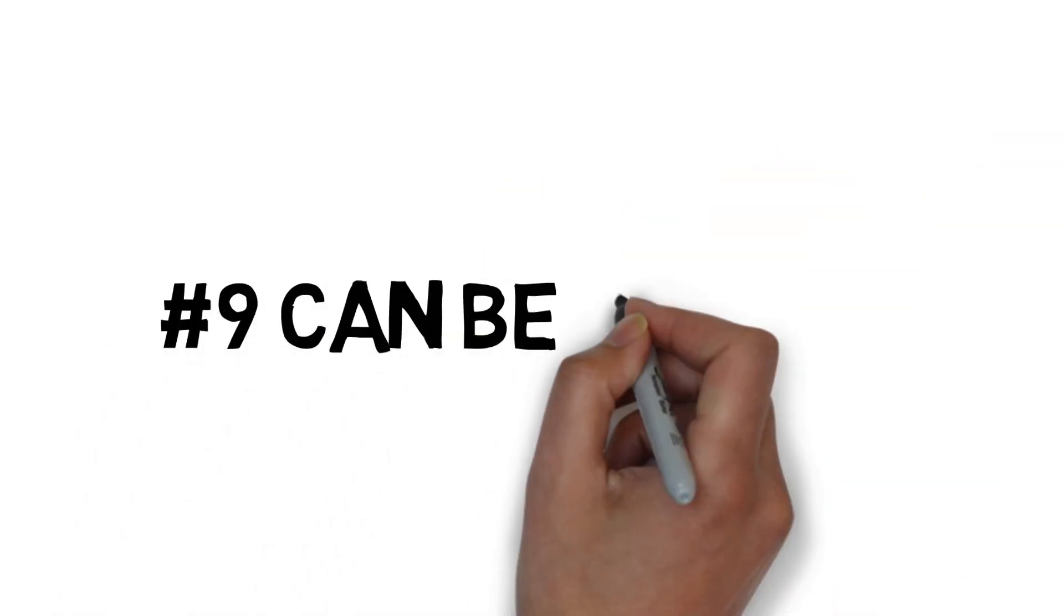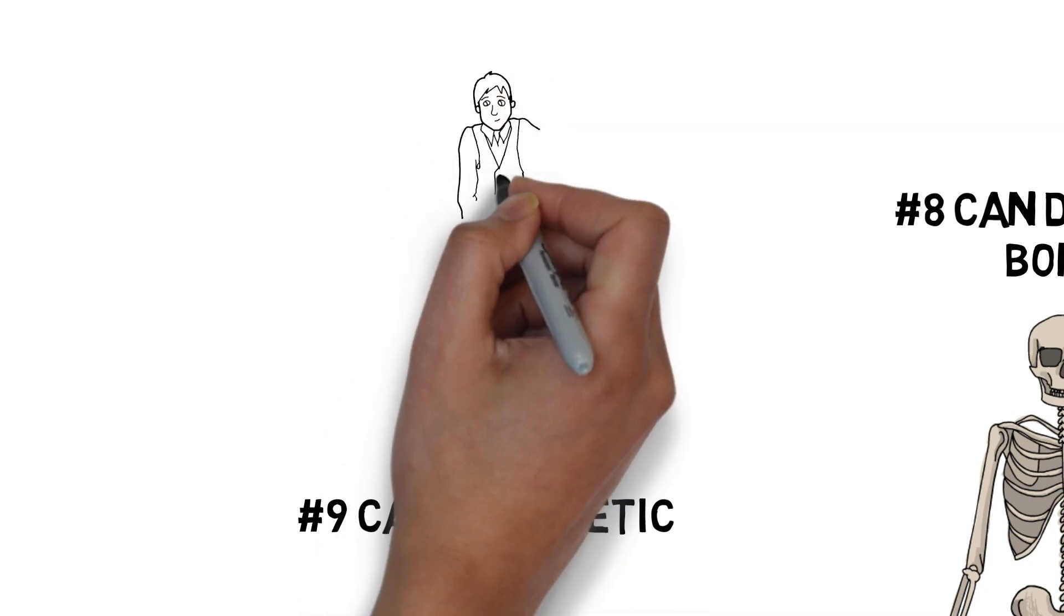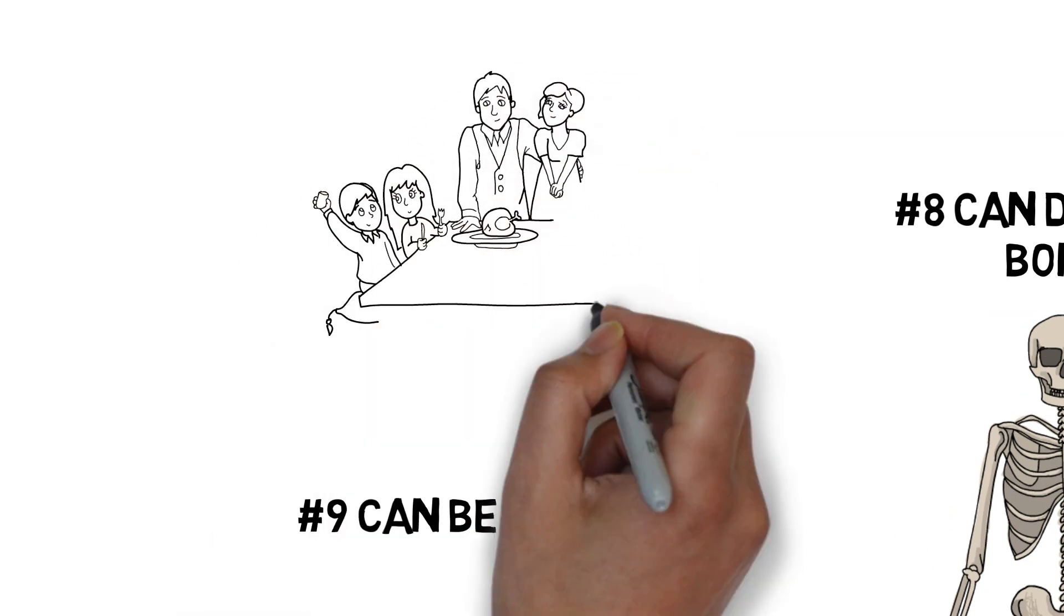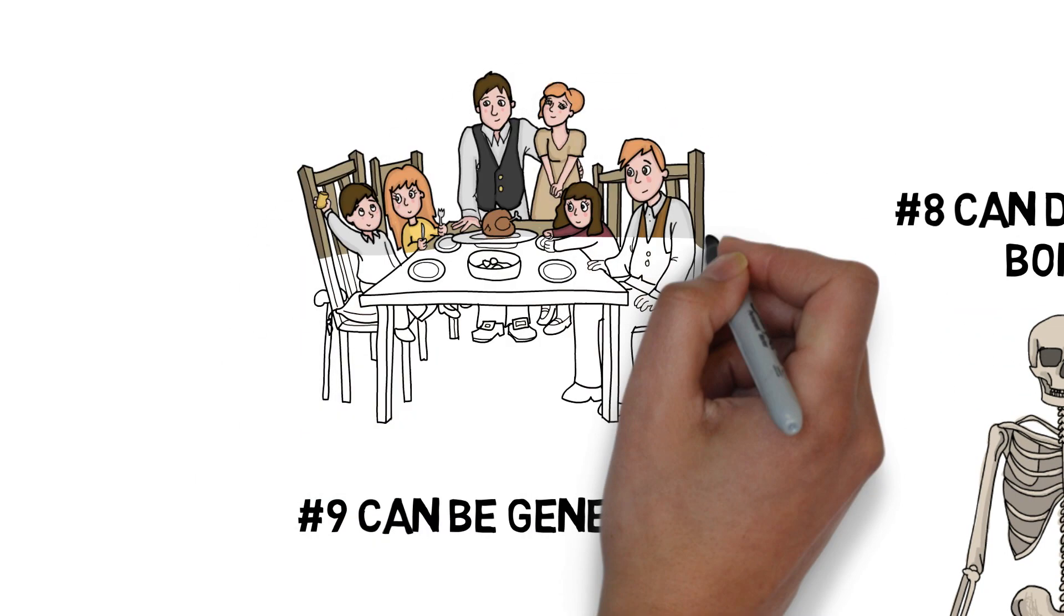Number 9. Celiac disease can be genetic. 20% of people diagnosed with celiac disease have an immediate family member who has also been diagnosed.